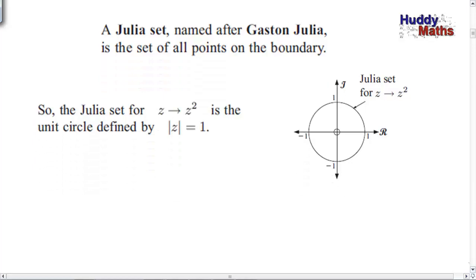The Julia set is a set of points on the boundary of the particular iterative procedure, or the orbit diagram you get when you plot the complex numbers. We're going to look at just the simplest quadratic iteration, z going to z². The Julia set — if it's on the boundary — will be the unit circle. So it's going to be the set of all points on the boundary of the iterations, and for z going to z², that's the circumference of the unit circle.